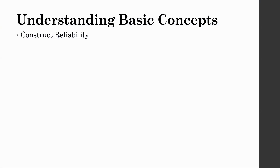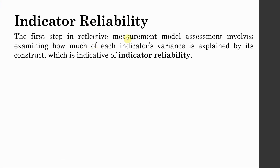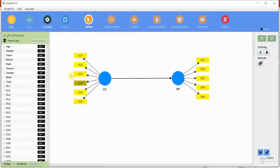How to Assess Construct Reliability Using SmartPLS 4. The first step in reflective measurement model assessment — we will talk about what is reflective and what is formative a little later. For now, this is a reflective model because the arrows are pointing towards the indicators, and this is a reflective construct as well. Later we will discuss what formative measurement is.